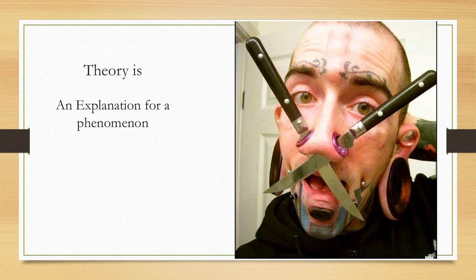What is a theory? A theory is an explanation for a phenomenon. I have this picture, and when I showed it to my kids they freaked out, but it sort of exemplifies why people do what they do. We come up with a theory, an explanation for why someone would do something like this. That's what a theory is.